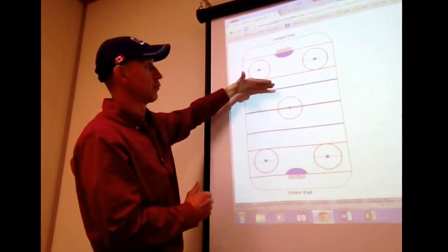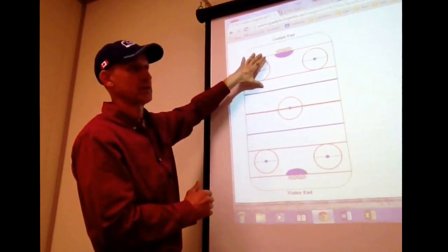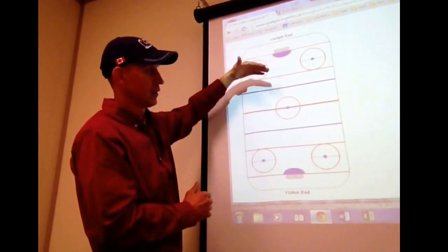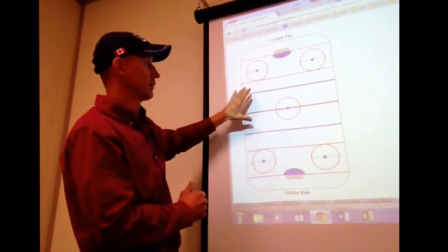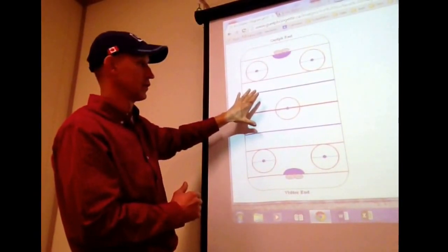So it's from the blue line in. This could be the offensive zone or the defensive zone, depending on what we're describing. The area between the two blue lines is the neutral zone all the time.